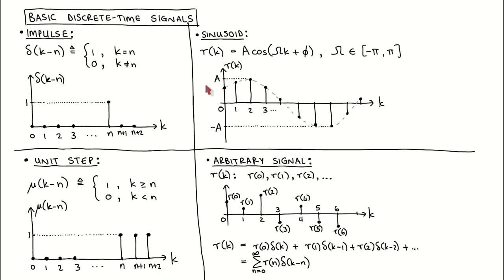The digital sinusoidal signal is given by the constant A times the cosine of omega times k plus phi, where A, omega, and phi are constants, and k is the time index. A is the amplitude, omega is the digital frequency, and phi is the phase shift. Omega is restricted to be no more than pi in magnitude, since a discrete time signal cannot represent frequencies higher than half the sampling frequency.